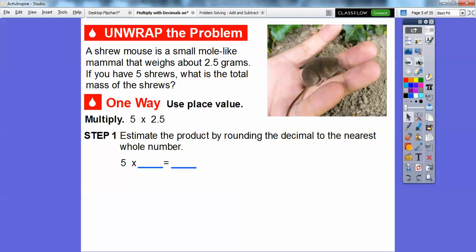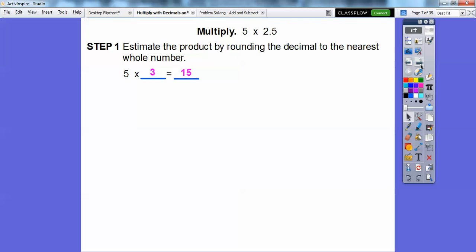Let's first estimate the product by rounding the decimal to the nearest whole number. So 2.5, we're going to round to 3. So we'll put a 3 right here. 5 times 3 is going to be 15. So it's going to be close to 15. It'll be a little bit less, because 3 is a little bit more than 2.5. So if our answer is a little bit less, it'll be a reasonable answer.